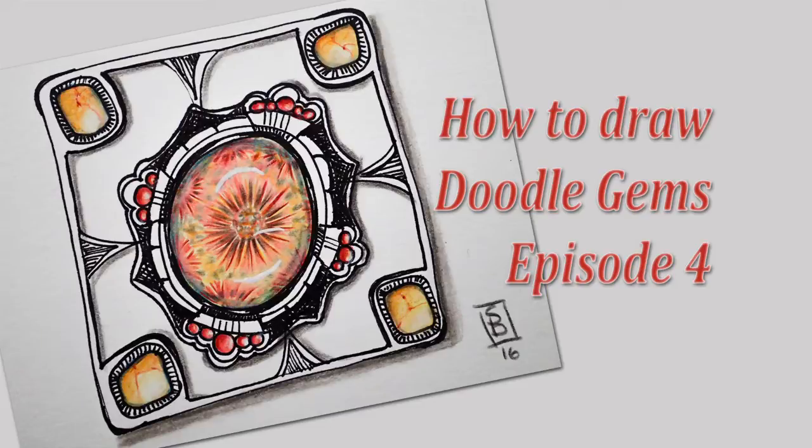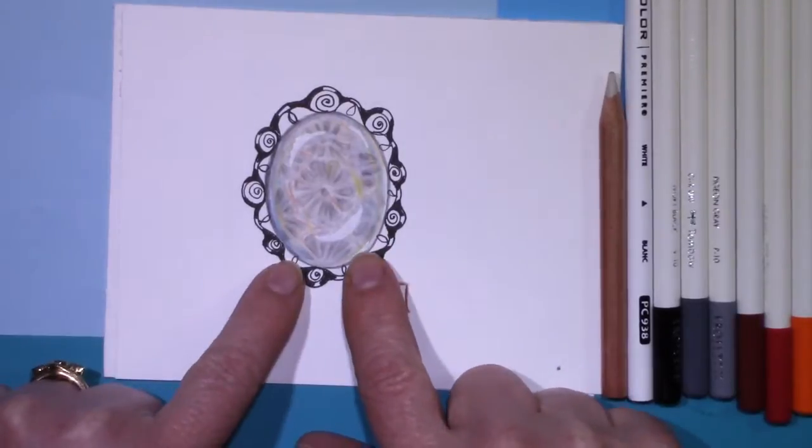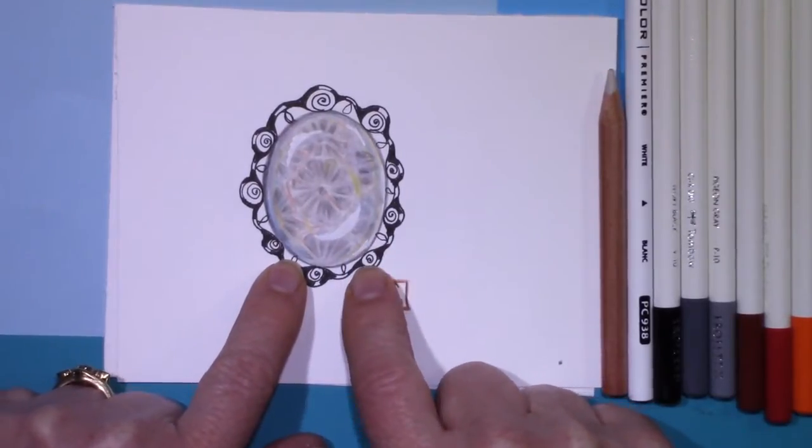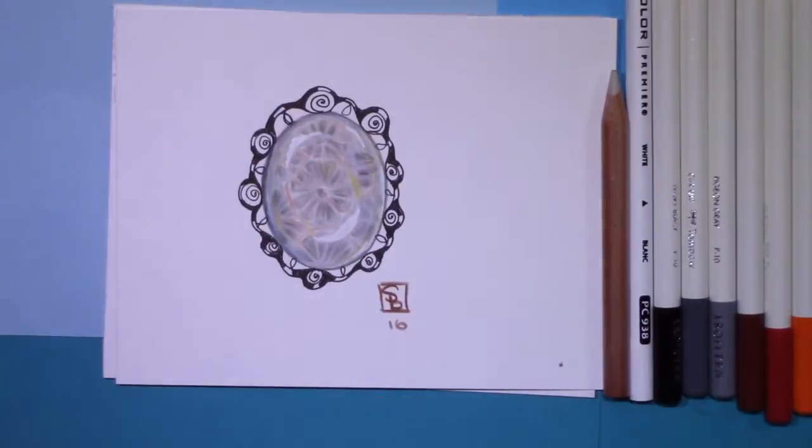I'm Stephanie from Deliberately Creative and I'm here to welcome you to episode four of my Doodle Gem series. This time we're going to be doing fossilized coral and this is one version of the fossilized coral that I just did up last night. I shared it on Facebook and Instagram and people were really receptive to having a video done of it and so that's what I'm doing today.